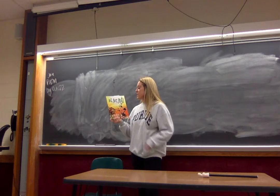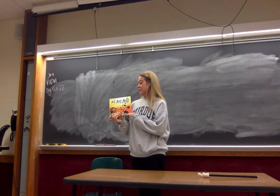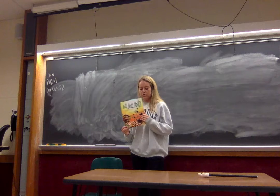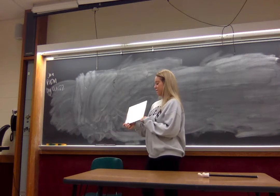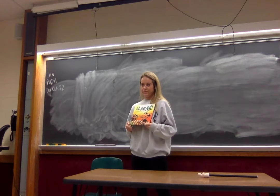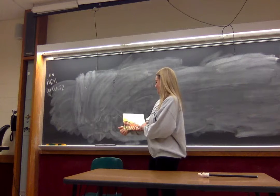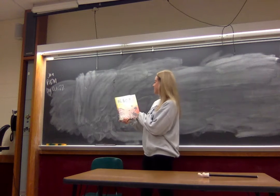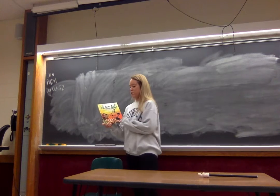The cover can tell us some important things such as the title, the illustrator, and author, and it can help us predict what might happen in the book. So do we have any predictions based off this picture as to what may happen in this book? It's going to be about an ant and where they live. Good, let's see if that happens. The book is called 'Ant Ant Ant: An Insect Chant' by April Pulley Sayre and illustrated by Trip Park.